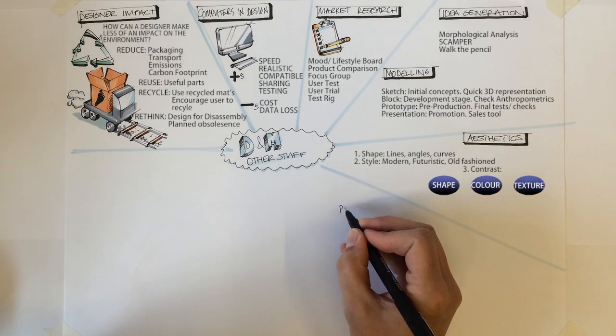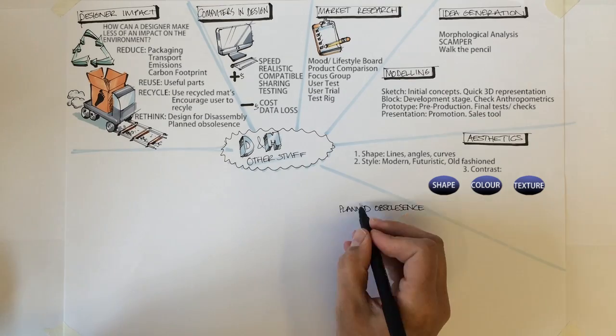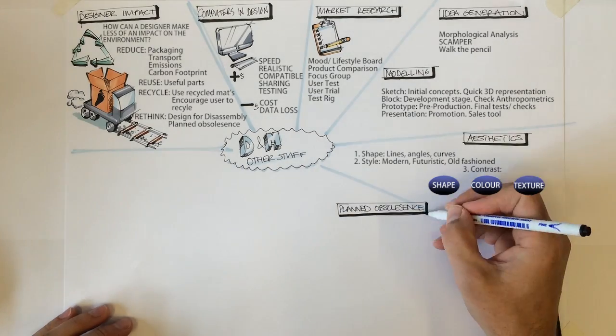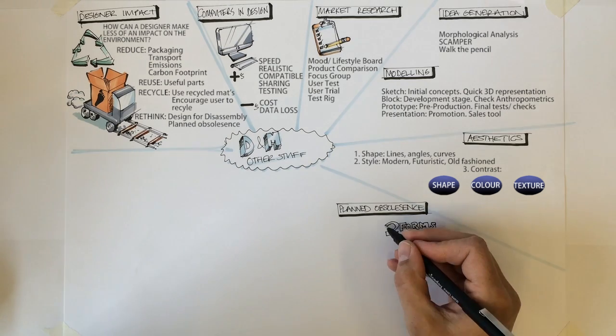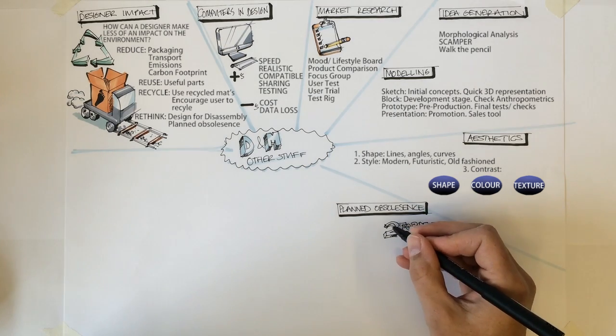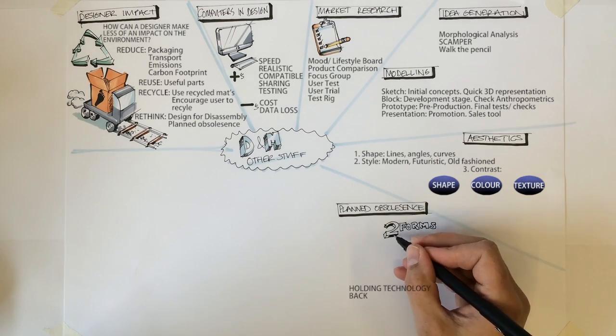Similarly, a different texture may let the user know that the product is expected to be held in a certain way. Planned obsolescence. If a technology becomes obsolete, it no longer has a use. It usually happens when more advanced technology comes along. Think VHS, DVD, Blu-ray. Holding technology back.